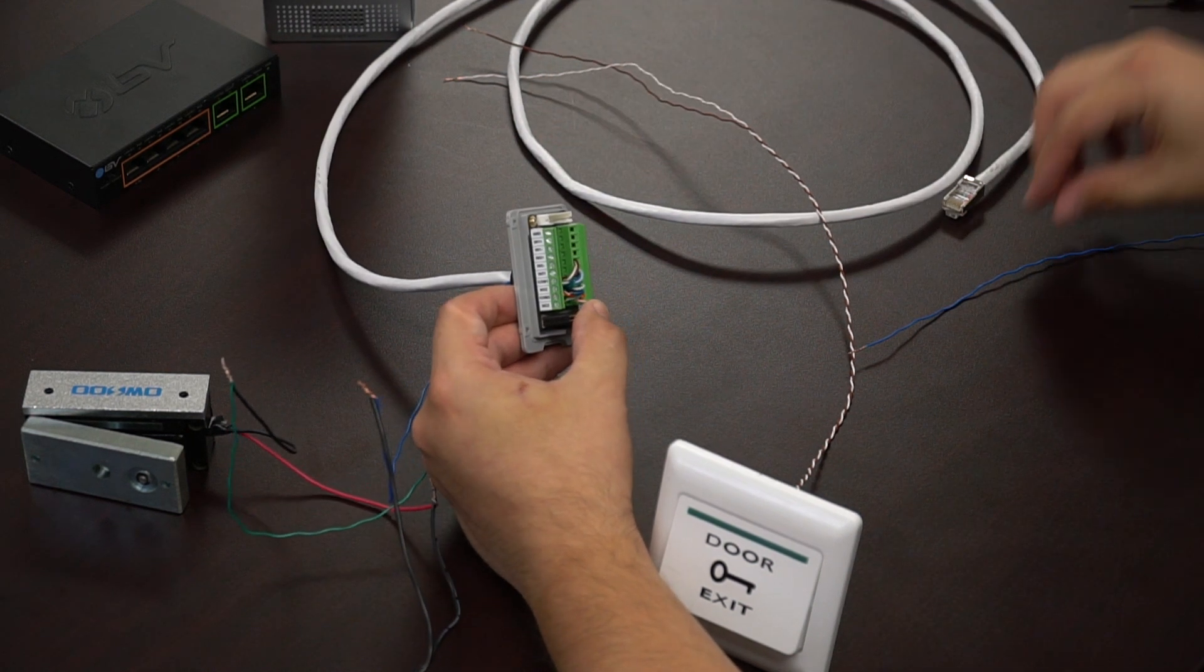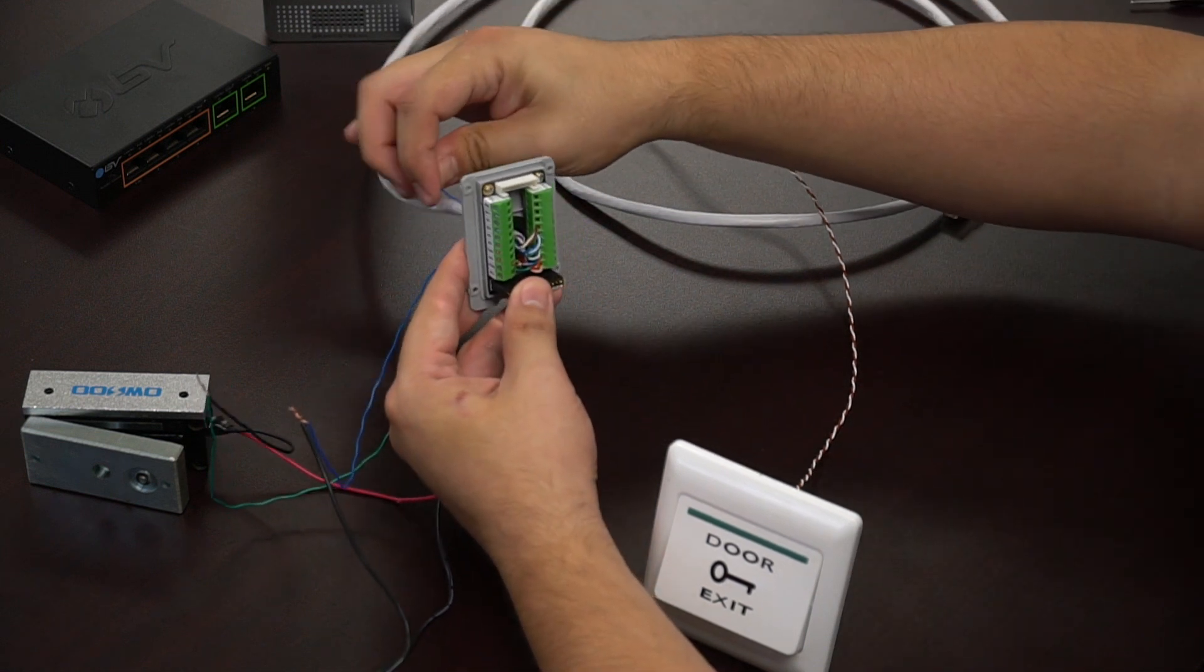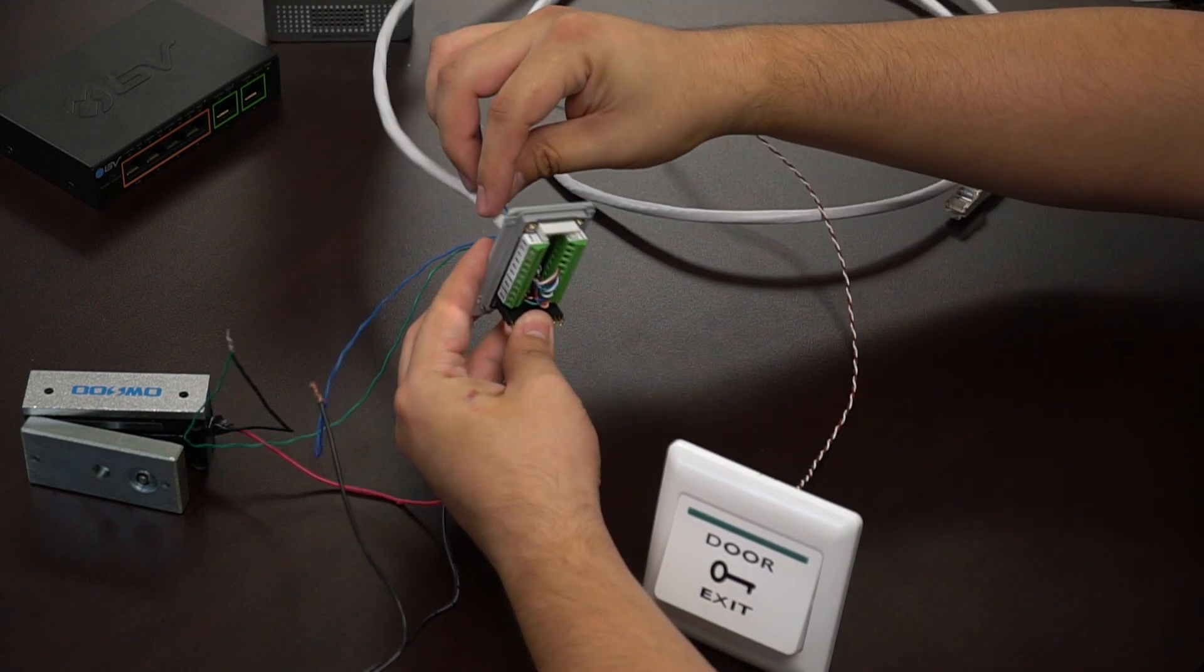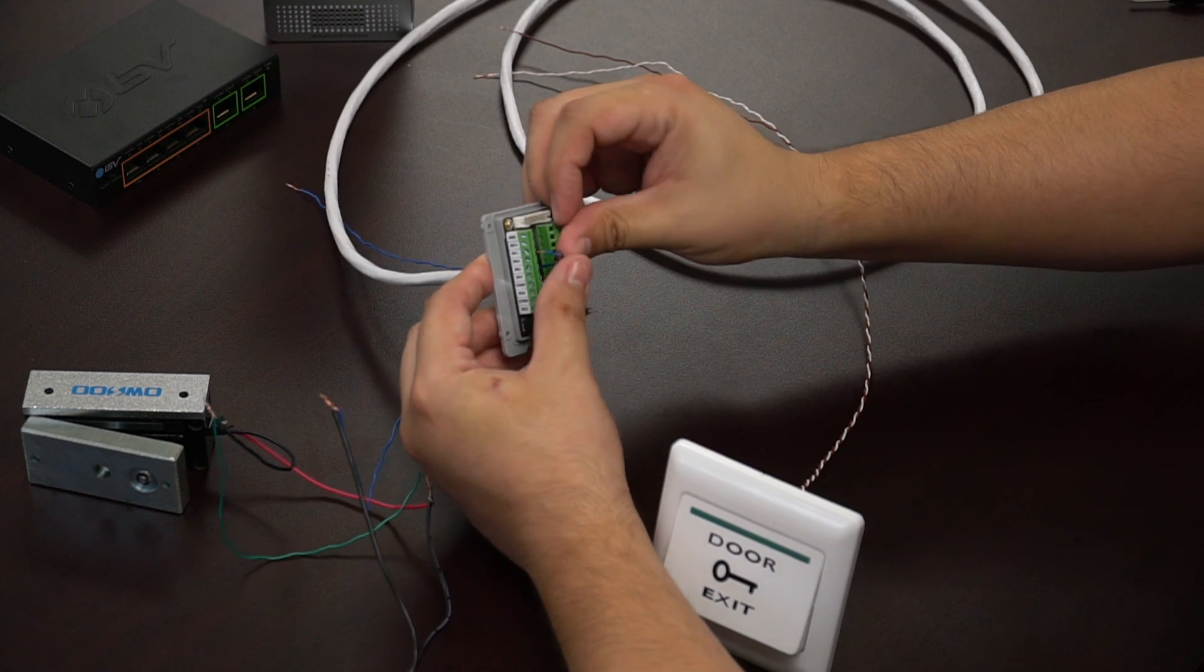Next we're going to go ahead and take a secondary wire, a secondary blue wire, and connect that into the N1 negative.